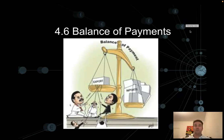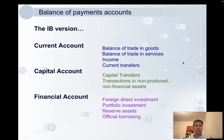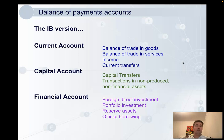Hi everyone, this is a lesson on section 4.6, the balance of payments. This is how governments both manage and classify all the money that is both sent overseas and received from overseas. Some countries do this slightly differently, so the IB have decided on a common version of the balance of payments that they expect us to all know and use for the course. We'll go through each of these in detail, but it will be worth it for you to get this down as a concise summary of the accounts.